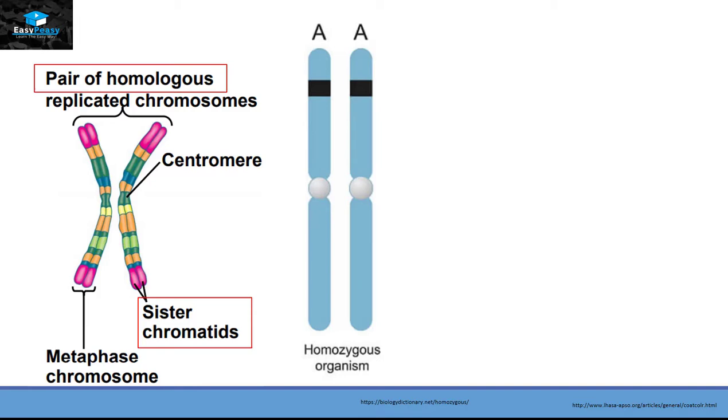So if the gene is similar like capital A, capital A, then the person will be called a homozygous organism. This capital A is the dominant gene. It can be a recessive gene having small a and small a.